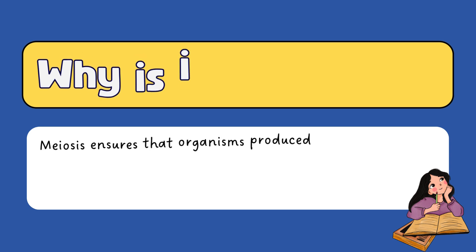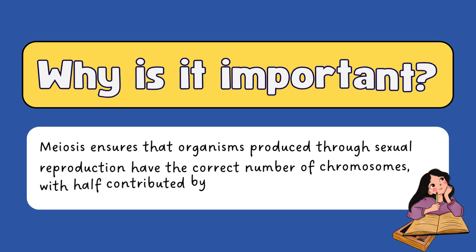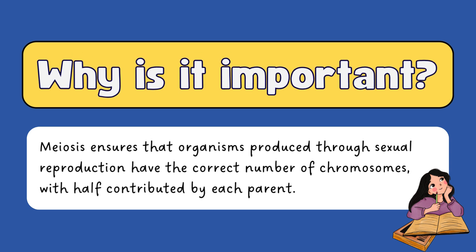But why is meiosis so important? Meiosis ensures that organisms produced through sexual reproduction have the correct number of chromosomes. Each parent contributes half of the chromosomes, maintaining the species' chromosome number across generations.